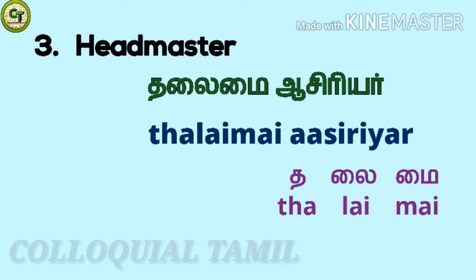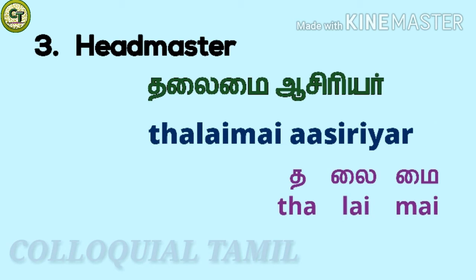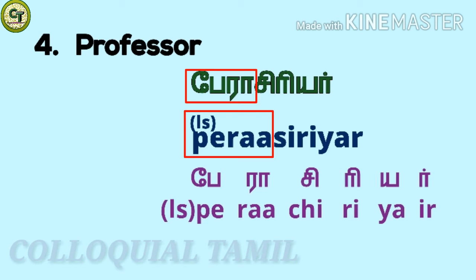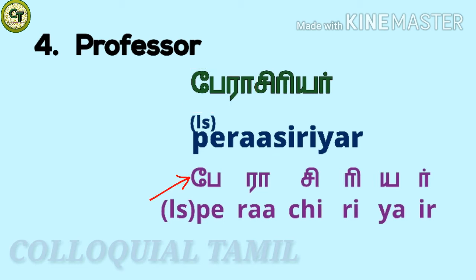You already know 'a siri air.' For 'thalai mai': 'the' a short zone letter, 'lai' - 'mai' together: thalai mai. So headmaster is 'thalai mai a siri air.' For professor: 'pair a siri air.' You know 'a siri air.' Instead of the first letter 'a' in 'a siri air,' you add these two letters: 'pay' a long zone letter, 'ra' a long zone letter together: 'pera siri air.'